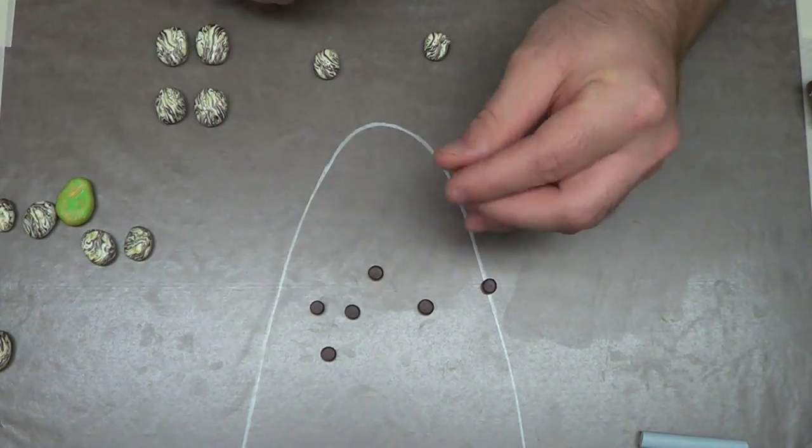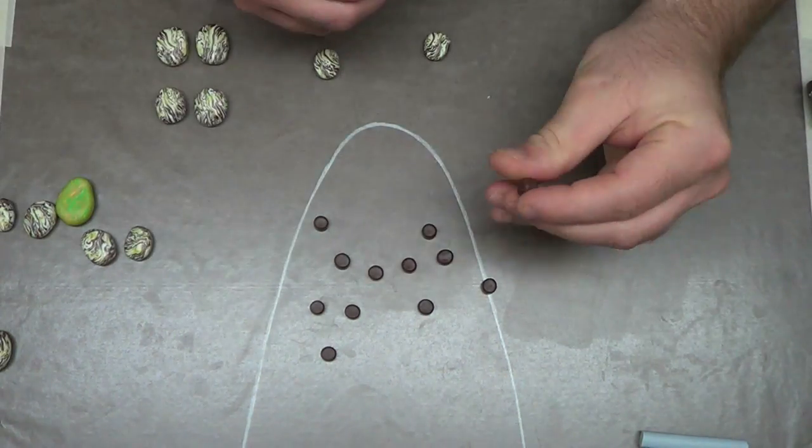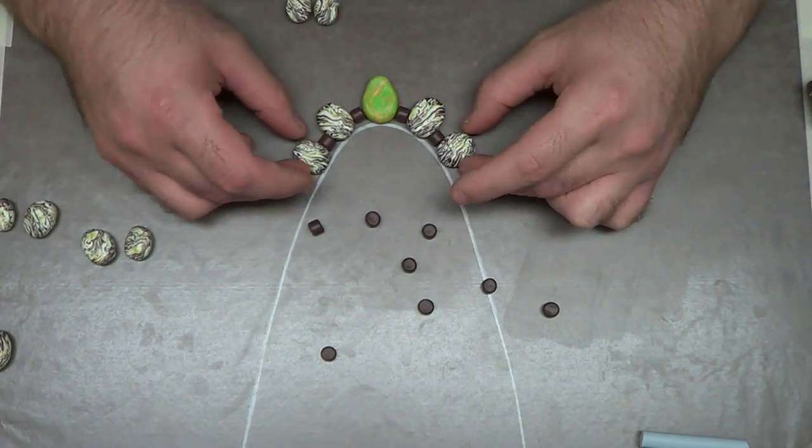I made these brown pieces of clay to kind of space the candy beads. I call them candy beads. I don't know if that's what you would call them, but they look like candy.